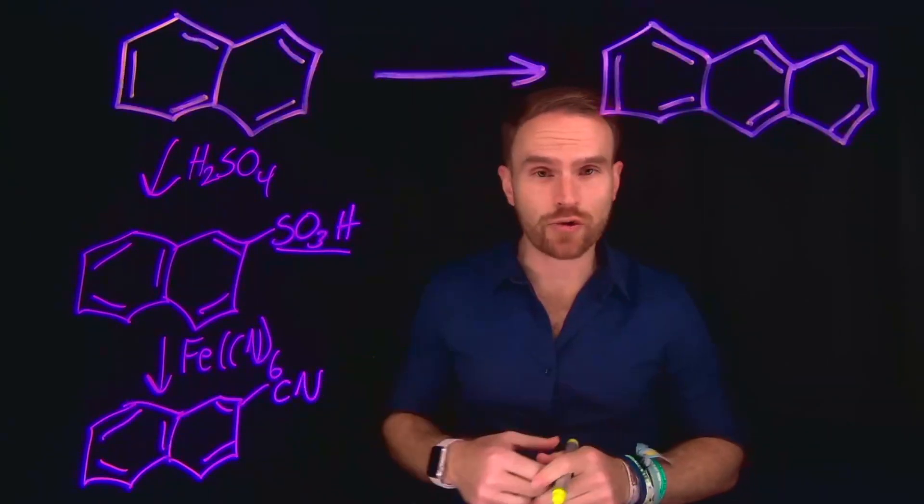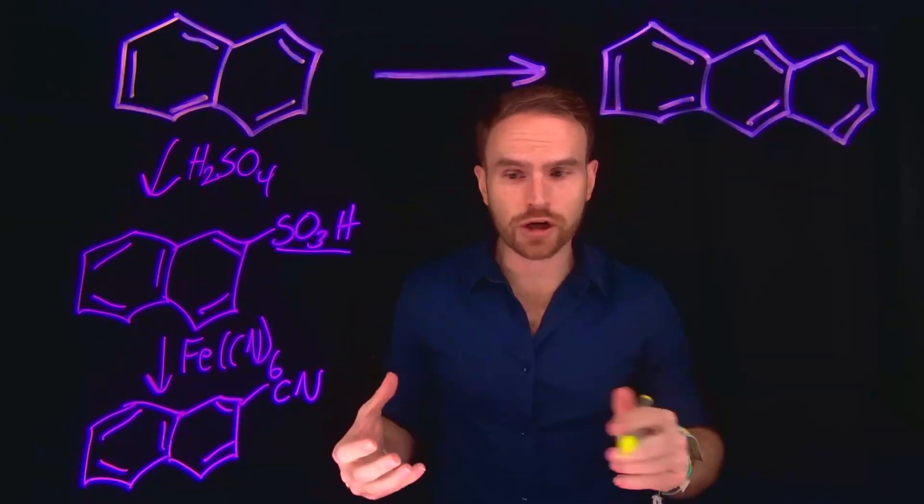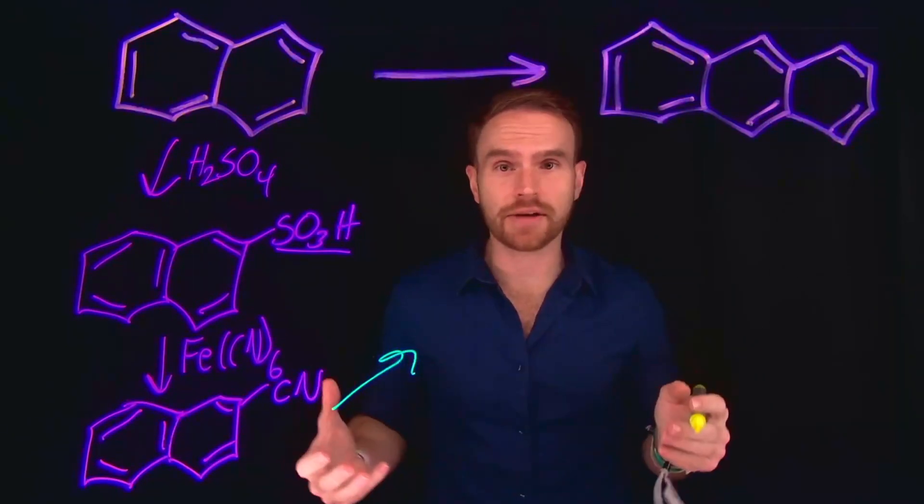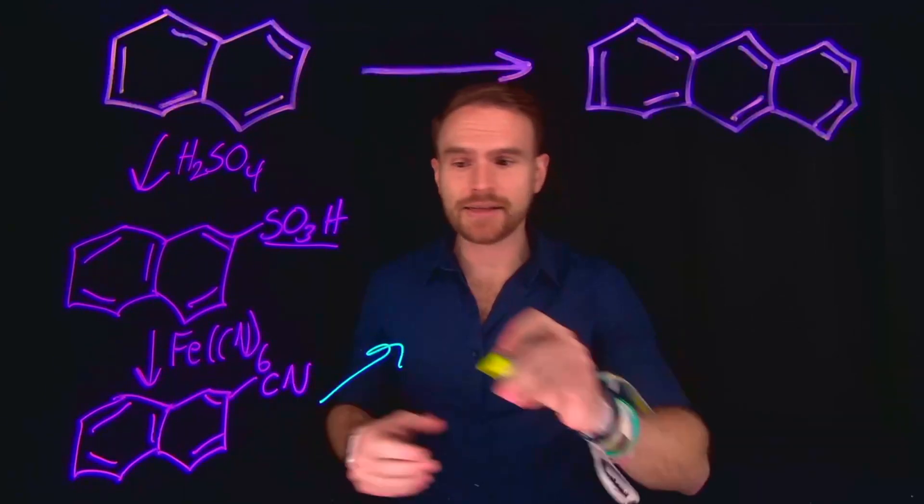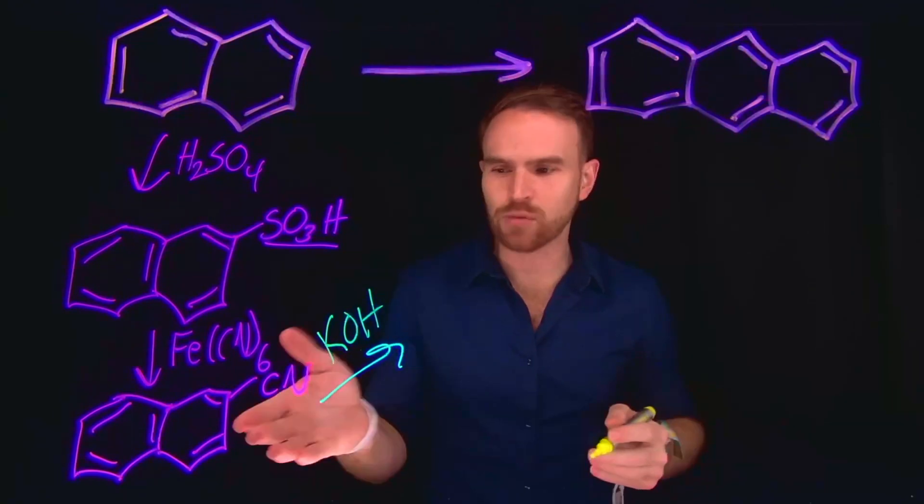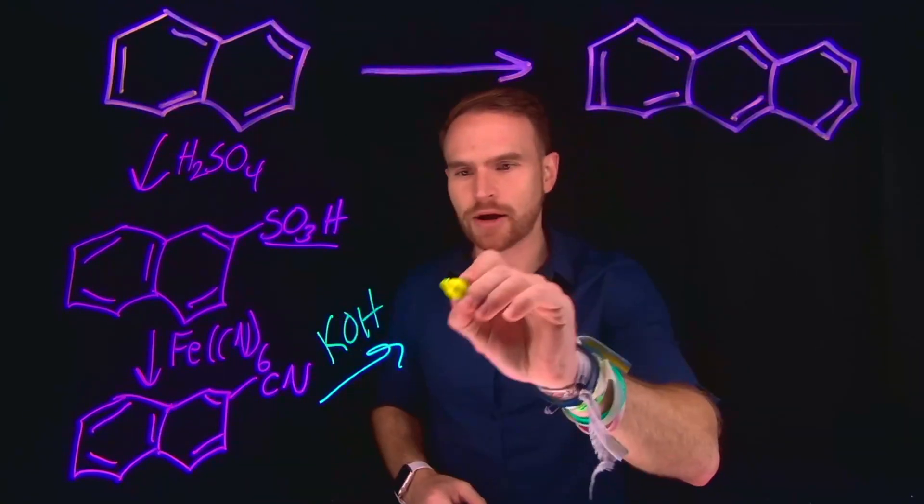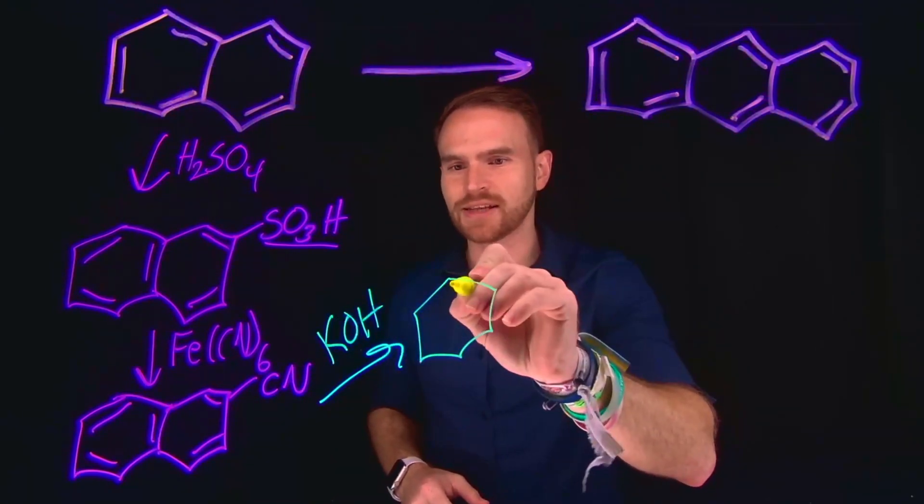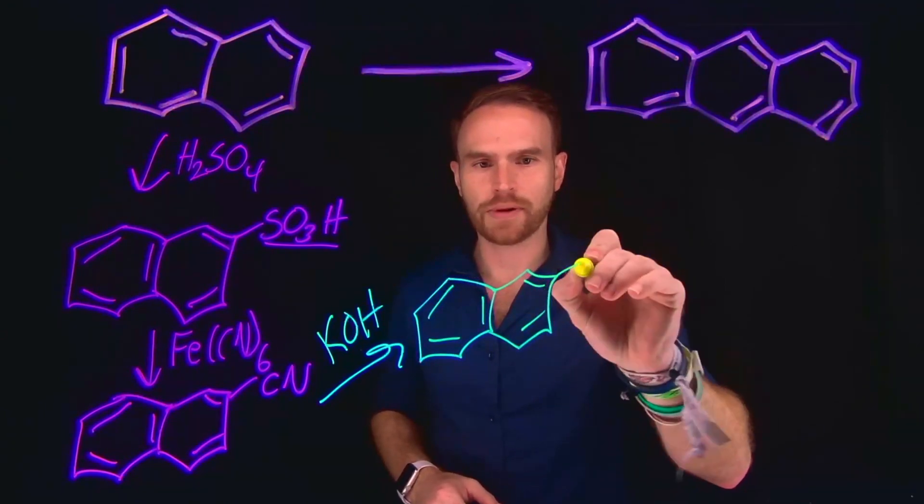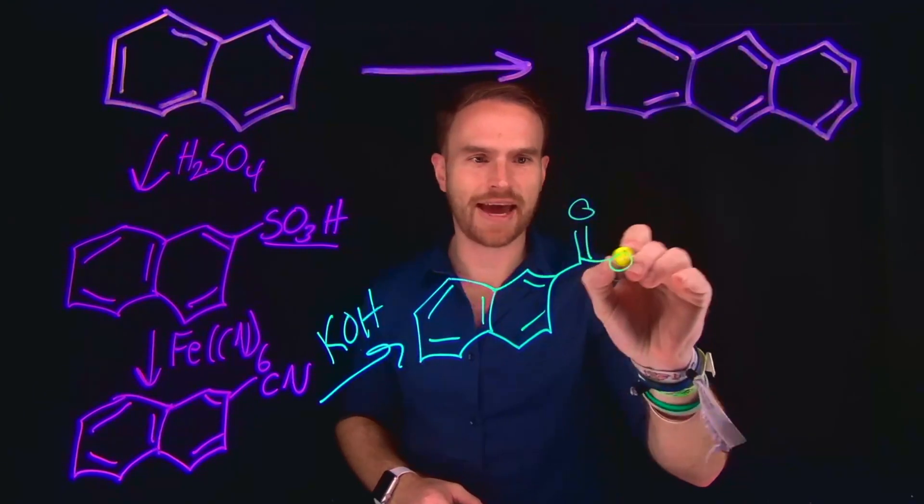The cyano group or nitrile is a very versatile functional group that we can turn into things like carboxylic acids. This can be done in a variety of pathways with H3O plus and heat or potentially even KOH, which is the example that I will use here to convert this nitrile group into a carboxylic acid. This will convert this cyano group into a carboxylic acid.